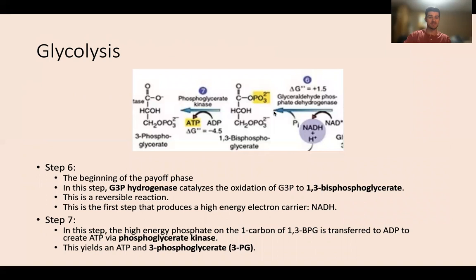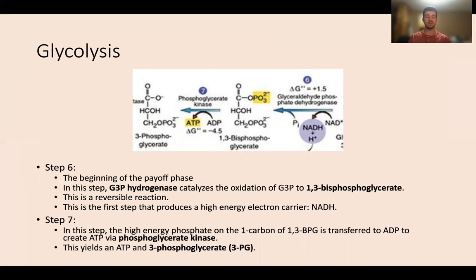Step six is the beginning of the payoff phase. The enzyme G3P dehydrogenase catalyzes the oxidation of G3P to 1,3-bisphosphoglycerate. This is a reversible reaction and is the first step in glycolysis that actually produces a high-energy electron carrier, NADH — one of those electron carriers that will be very useful for the electron transport chain.